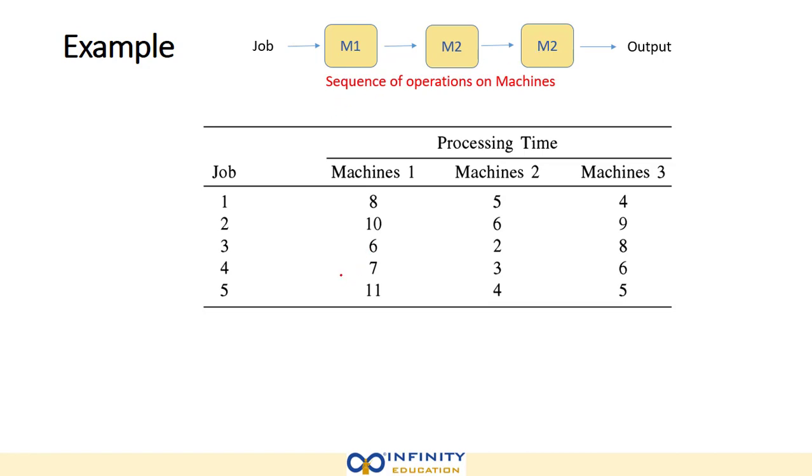Now the required conditions for moving ahead will be minimum of time for any job on machine one should be greater or equal to the maximum time available on M2, or minimum of T of M3 should be greater or equal to maximum time available on M2.